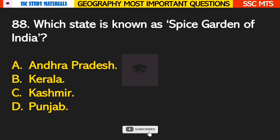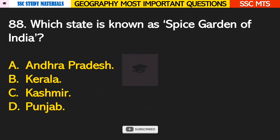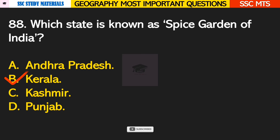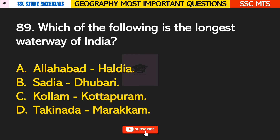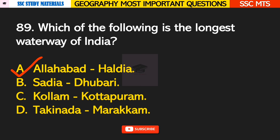Question number 88: which state is known as the Spice Garden of India? Answer B — Kerala. Question number 89: which of the following is the longest waterway of India? Answer A — Allahabad to Haldia.